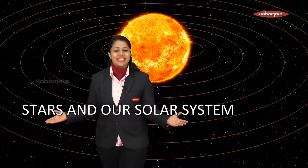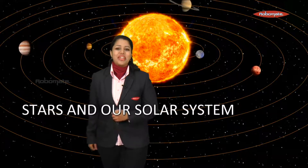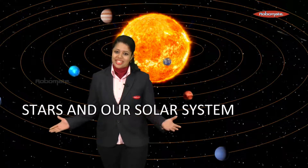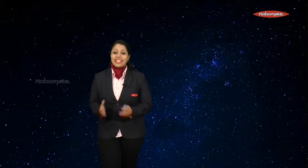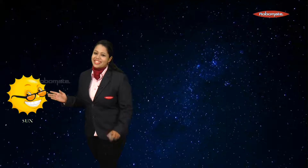Let's start with the first chapter of science — Stars and Our Solar System. Let's understand the solar system in detail and the different components of our solar system. The first component is the Sun.